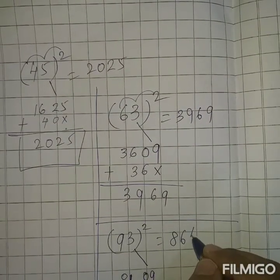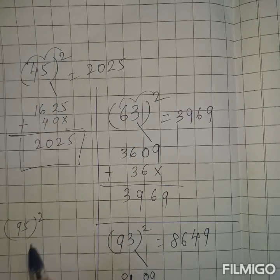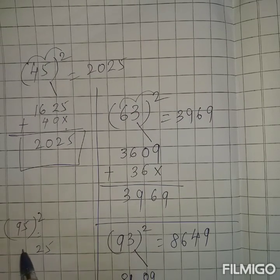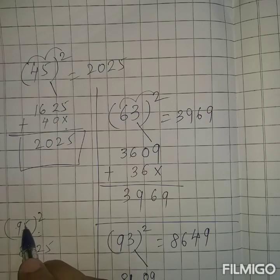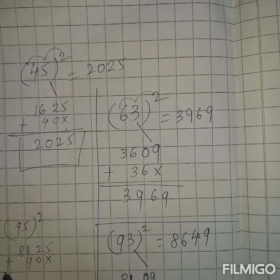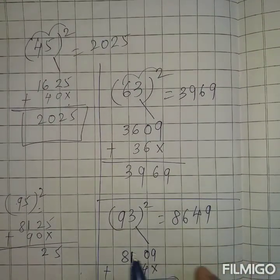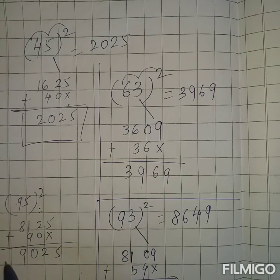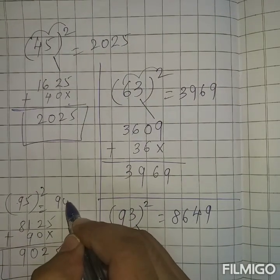Go for 95. Square of 5: 25. And square of 9: 81. Next, 9 × 5 = 45 and 45 × 2 = 90. Leave one place. 5, 2, then 8, 9 and 10. So square of 95 is 9025.